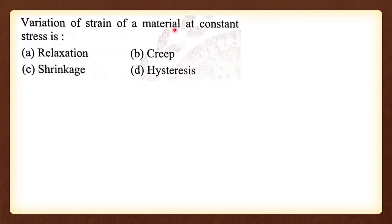Variation of strain of a material at constant stress — when the amount of strain varies at constant stress, that phenomenon is called creep. Relaxation means stress varies; creep means strain varies at constant stress. Option B is the correct answer.